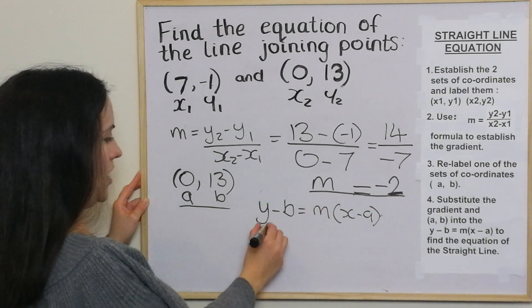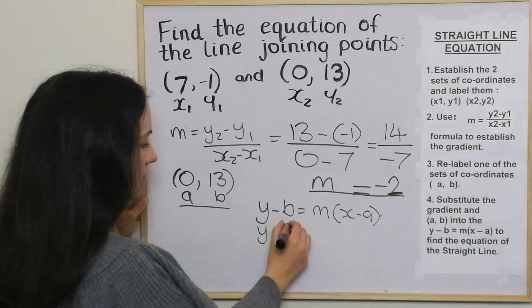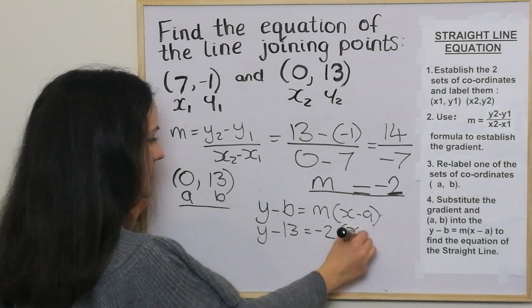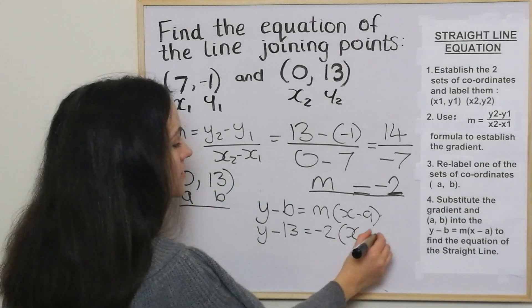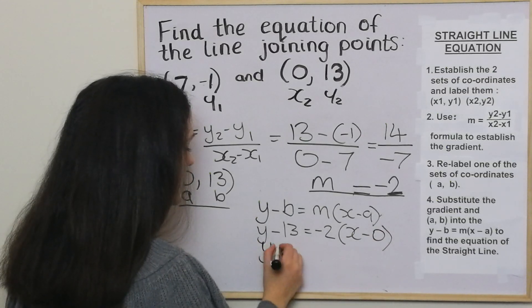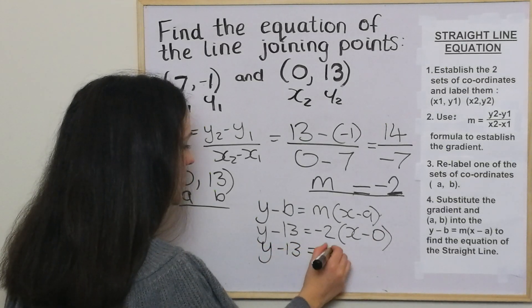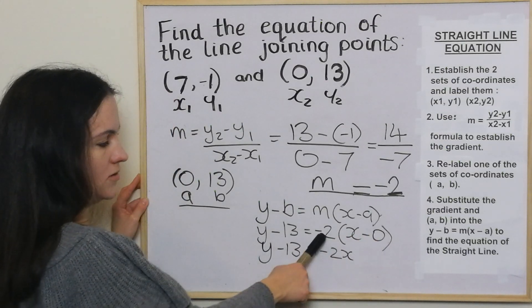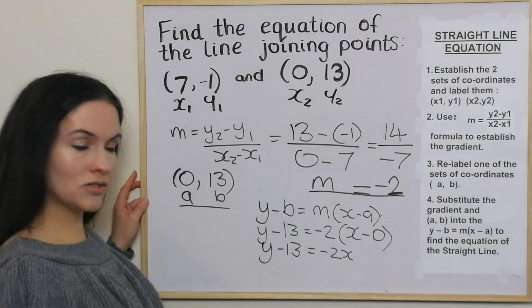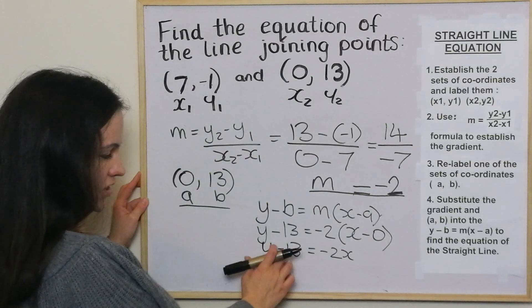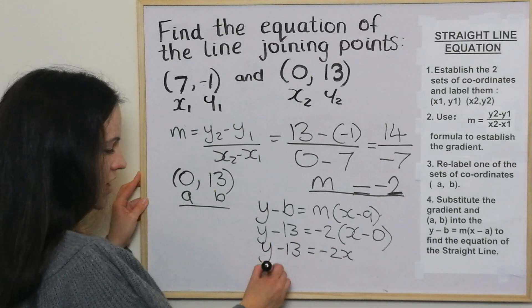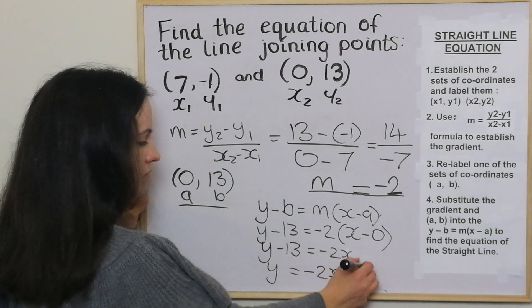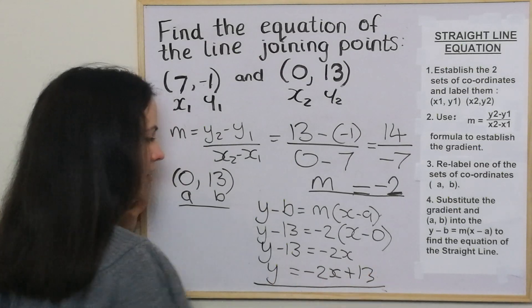So it's y minus 13 equals the gradient which is negative 2, x minus 0. Then we've got y minus 13 equals negative 2x. The minus 2 times 0 just disappears. Carrying this over so y is the subject, it's going to be y equals negative 2x plus 13. And that's the answer.